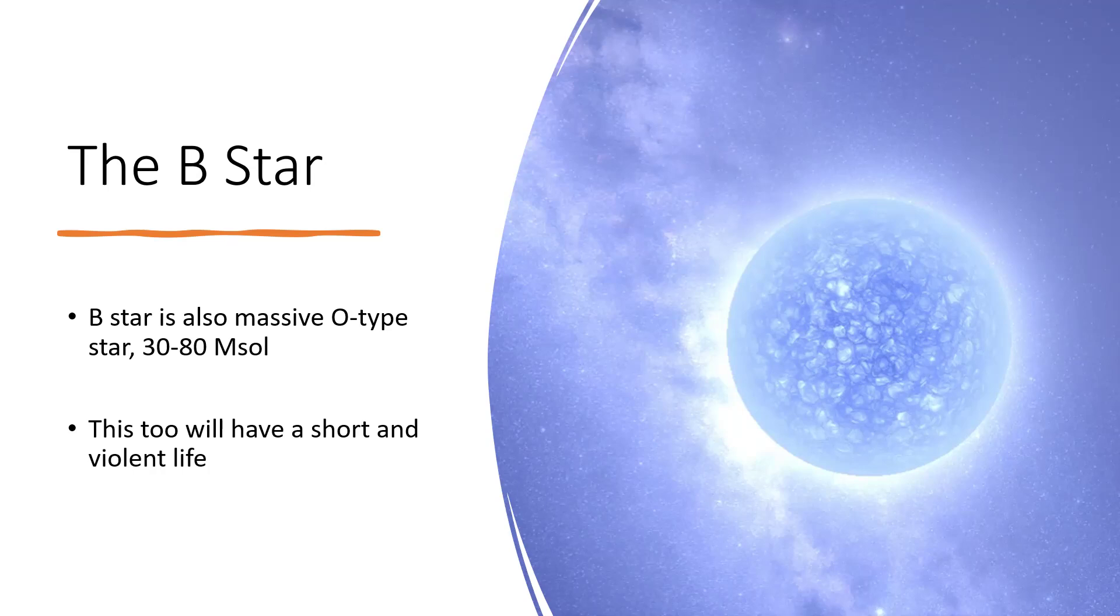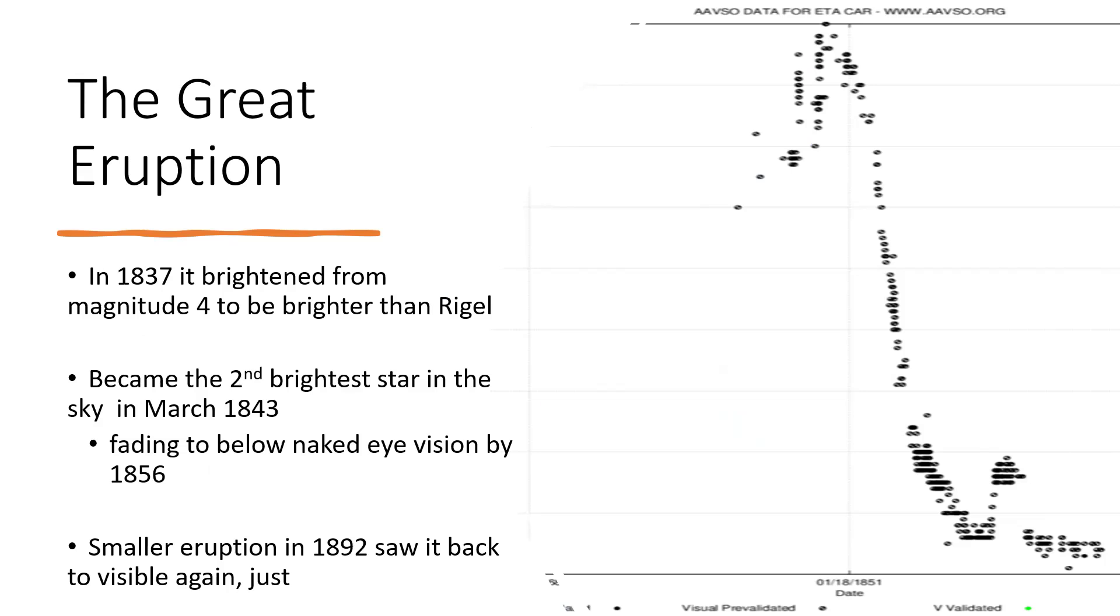Speaking of the violence in the system, back in 1837, what really got everybody's attention was that Eta Carina suddenly brightened right up from obscurity to being one of the brightest stars in the sky. It went from magnitude four, so visible but not spectacular, to being brighter than Rigel in Orion, which is a magnitude zero star. The light curve is shown on the right with the enormously high peak for all those measurements. Then it declined back down again.